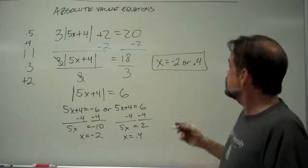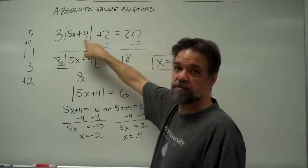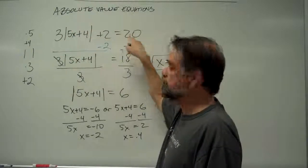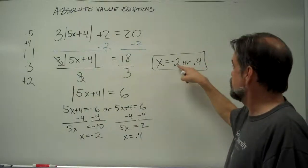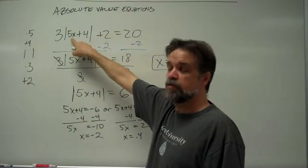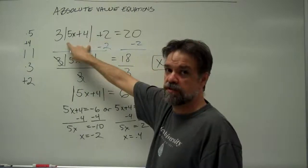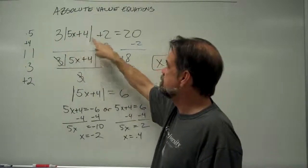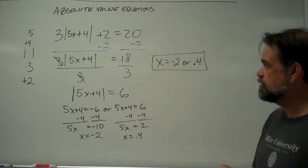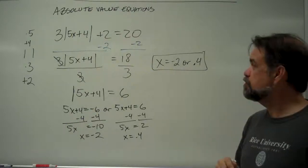Let's verify. For x equals negative 2: 5 times negative 2 is negative 10, plus 4 is negative 6. The absolute value is positive 6, times 3 is 18, plus 2 is 20. Yes, it works. For x equals 0.4: 5 times 0.4 is 2.0, plus 4 is 6. The absolute value is positive 6, times 3 is 18, plus 2 is 20. That works too. With absolute value problems, frequently — not always — you're going to get two answers.